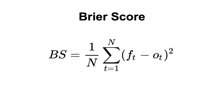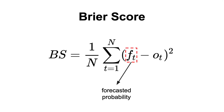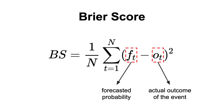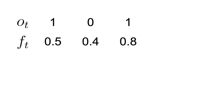The Brier score, named after its inventor the meteorologist Glenn Brier, helps us in solving this problem by measuring how well calibrated our model is. It is computed as the average squared difference between the forecasted probabilities, ft, and the actual outcome of the event, ot. Now let's look at an example to see it in action. Suppose that we have the following labels and our model forecasts the following probabilities. Putting these numbers into the formula, we get a Brier score of 0.15.